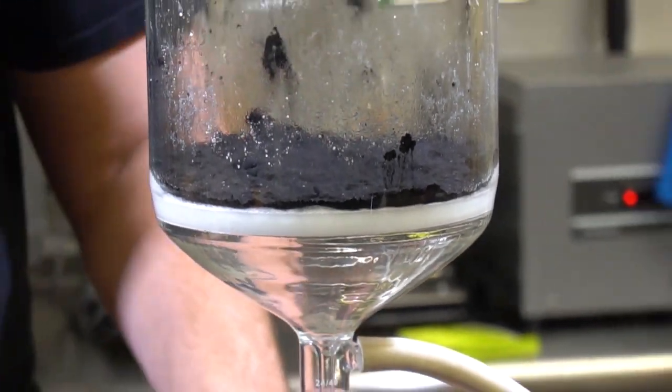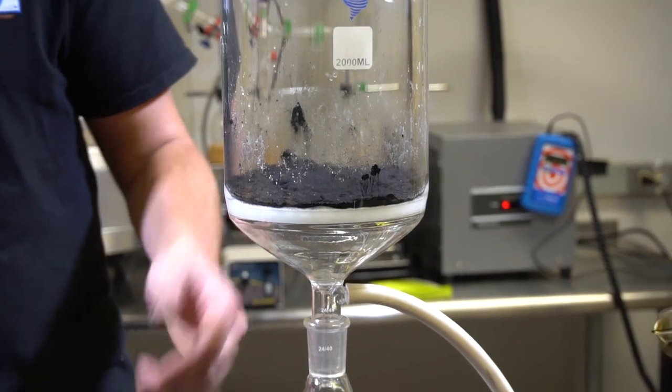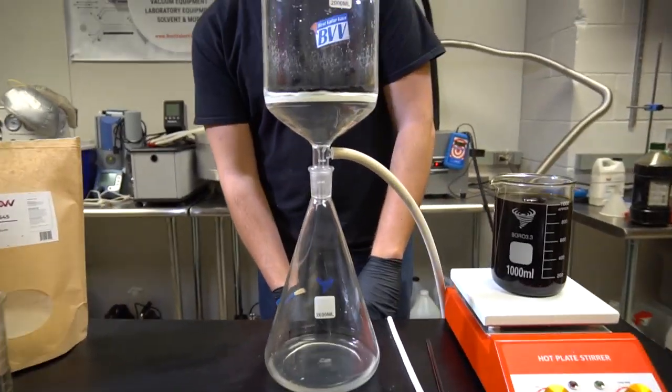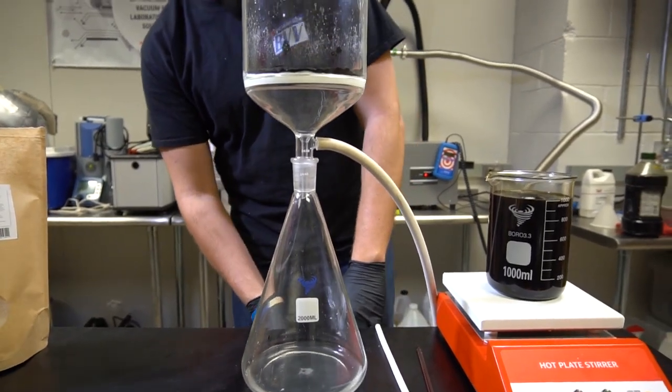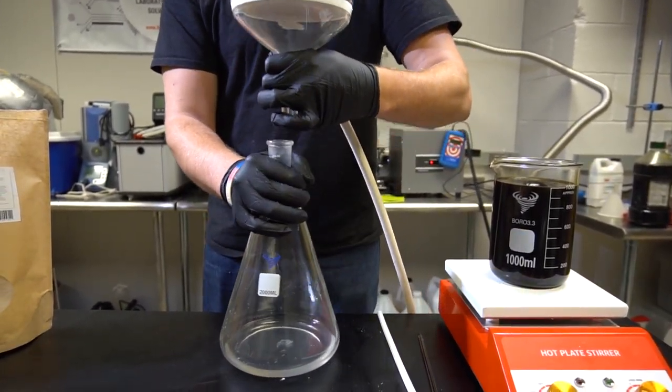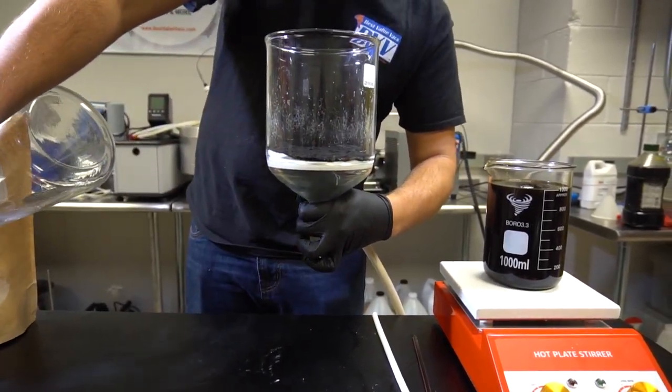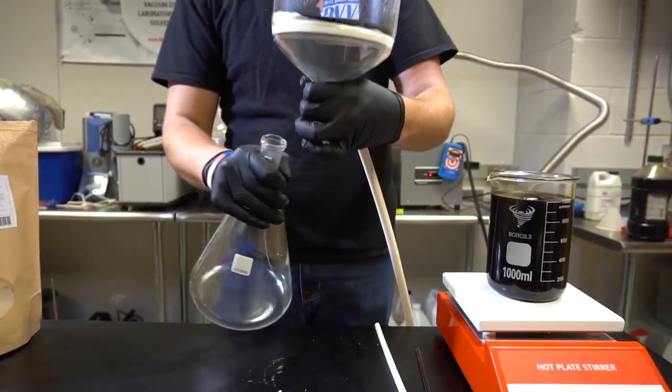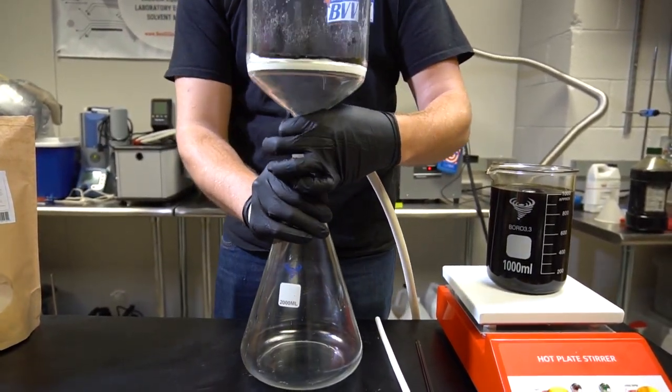Now we're going to let this sit for 10 to 15 minutes to dry out and then we'll put our solution in. Let that sit for 15 minutes while the vacuum is pulling just to dry it out a little bit better. I'll now turn off the vacuum pump. I'm going to empty out my ethanol. And now I'll be ready to put my solution in the top.